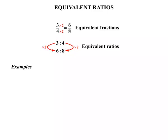Let's look at a few examples. We're asked to complete the ratios. The first one, we have 5 to 2 and the equivalent ratio is 30 to something — we need to fill in that something. We can see that we've gone from 5 to 30, and that requires a multiplication by 6. So simply we multiply the 2 by 6, and when we do that we end up getting 12.